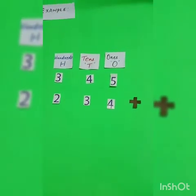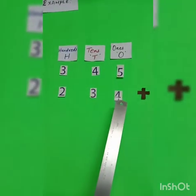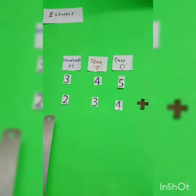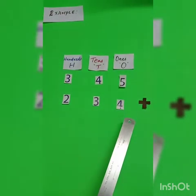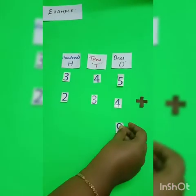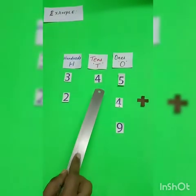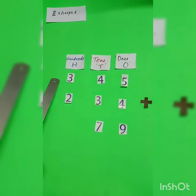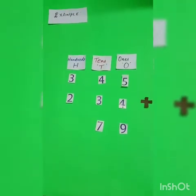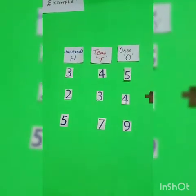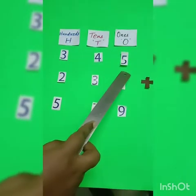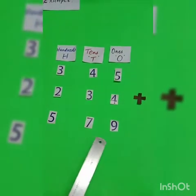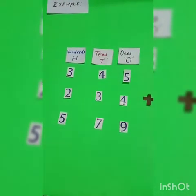We start by adding the numbers in the ones column and then the tens column and at last the hundreds column. 5 plus 4 equals 9. Next, 4 plus 3 equals 7. And finally, 3 plus 2 equals 5. Hence, the sum of 345 and 234 is 579. Now let us add four-digit numbers.